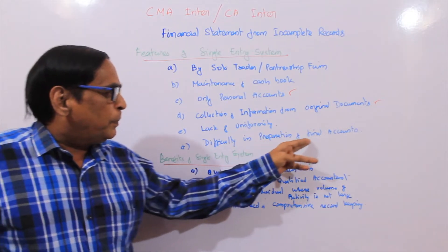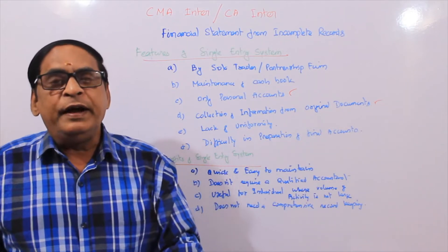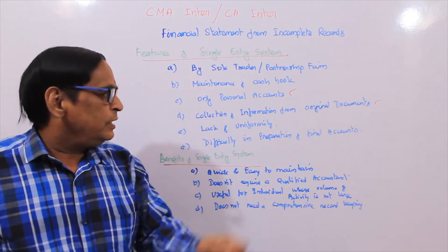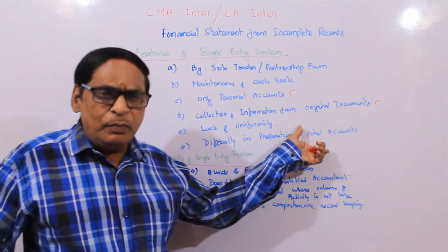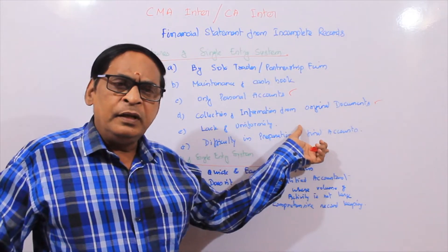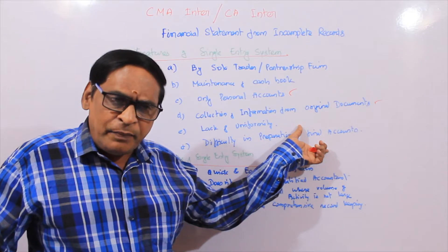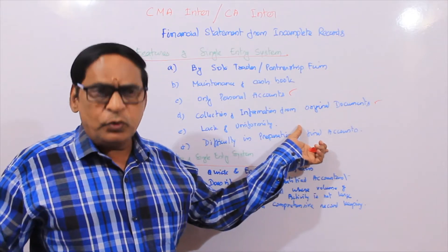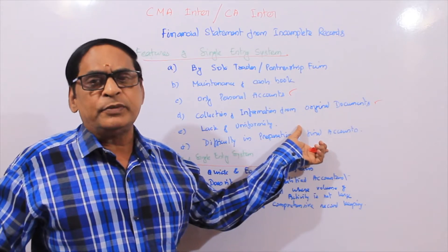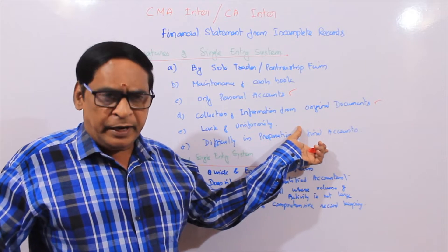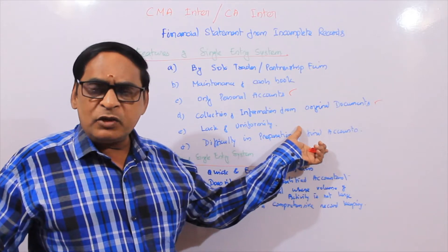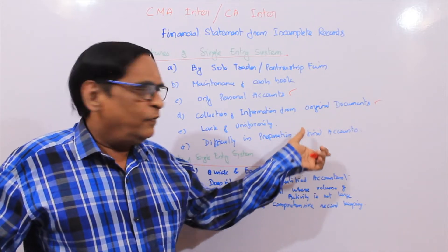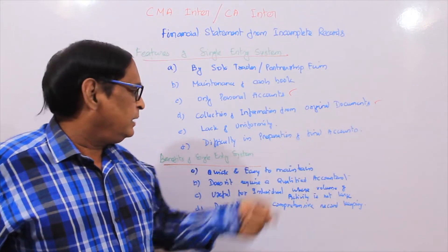Difficulty in preparation of final accounts — trading account, profit and loss account, balance sheet, etc. They are not maintaining nominal accounts. One income — trading account, profit and loss. Income and expenditure maintenance is not maintained under single entry.